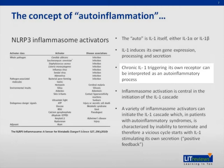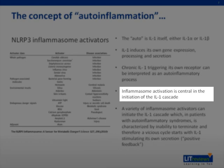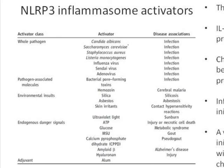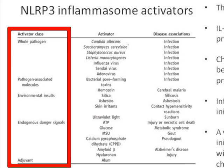There is something called the inflammasome, and inflammasome activation is central in the initiation of the IL-1 cascade. On the left part of the slide, you can see a number of inflammasome activators. The term NLRP refers to a certain protein, as there are multiple inflammasomes based on the proteins involved. NLRP3 is the most well-studied one. The inflammasome NLRP3 can be activated by a large number of things such as pathogens, environmental insults such as silica and asbestos, endogenous danger signals, and even adjuvants from vaccines.